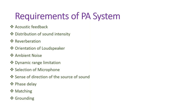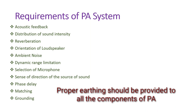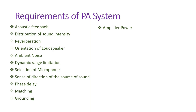Grounding is another important requirement. The chassis and shields of equipment and coaxial cables should be properly earthed — for example through a water pipe — otherwise there will be noise. Proper earthing must be provided in a PA system.